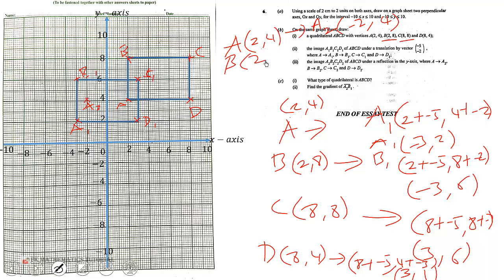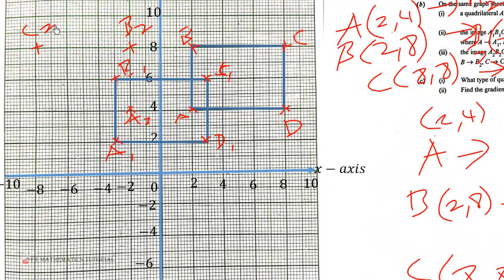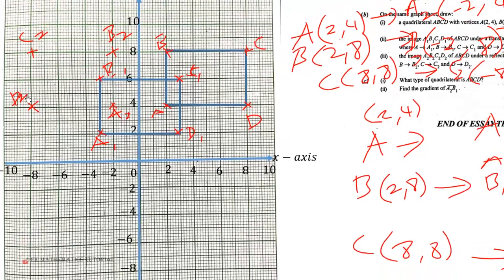Then C (8,8) maps onto C2, which is (-8,8). And finally, D2 will be (-8,4), which is here. So we connect them and we have this.